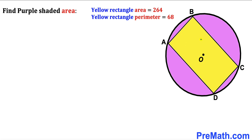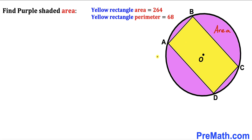Welcome to Pre-Math. In this video we have got a yellow rectangle ABCD fully inscribed in a circle with center O, such that the area of this yellow rectangle is 264 square units whereas the perimeter of this yellow rectangle is 68 units. Our task is to calculate the area of the purple shaded region.